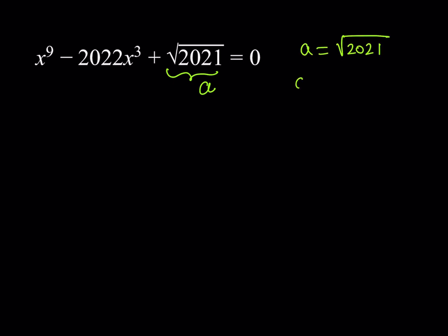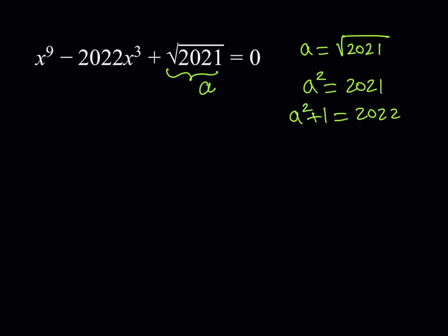This is the first trick. We can just replace everything, so all numbers are being replaced by something involving a. It's going to look like x to the ninth power minus — now 2022 is going to be replaced by a squared plus one — times x to the third, plus a, is equal to zero. You might be thinking: can I use the difference of two squares? Nope, that's not what we're going to do.